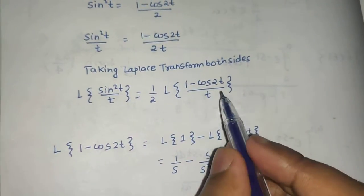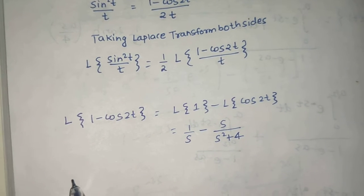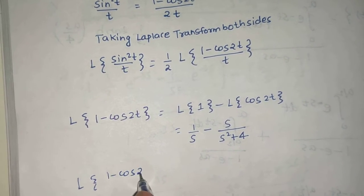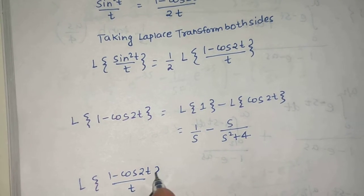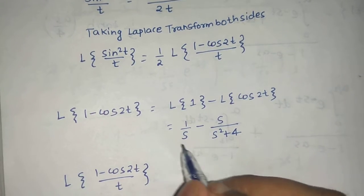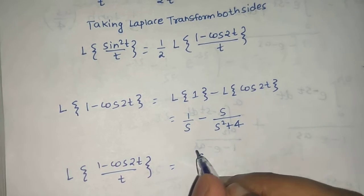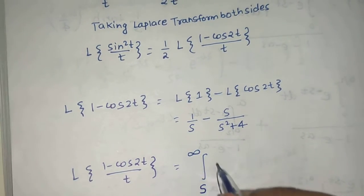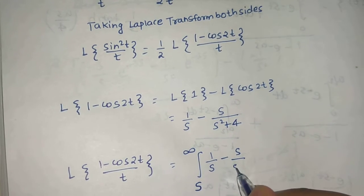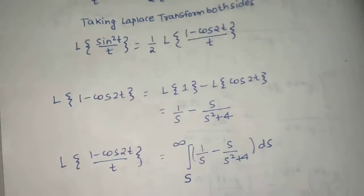Now we know the division by t property, which says if we divide by t, the Laplace of (1 minus cos 2t) divided by t means we take whatever we got for 1 minus cos 2t and integrate it from s to infinity. So if we integrate with respect to s from s to infinity, we will get something like this.